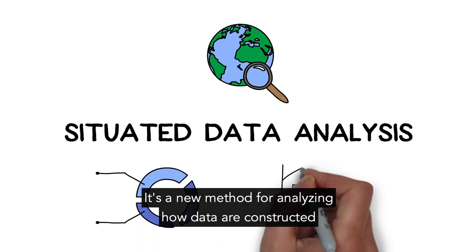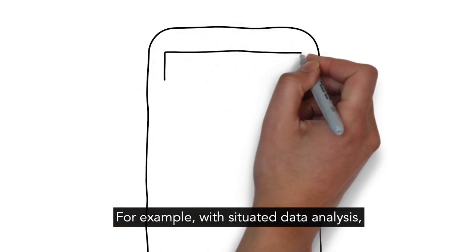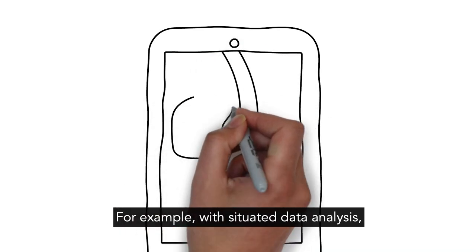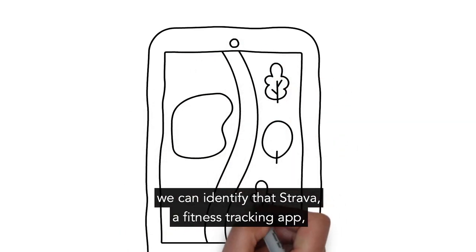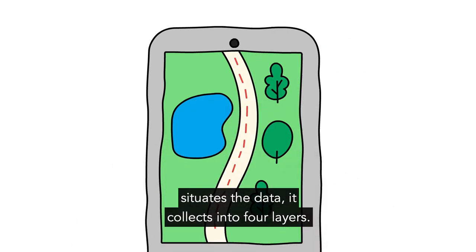It's a new method for analyzing how data are constructed and then presented back to us in different ways. For example, with situated data analysis, we can identify that Strava, a fitness tracking app, situates the data it collects into four layers.